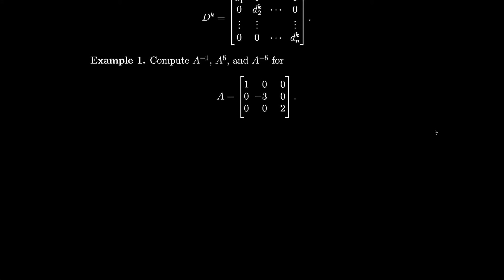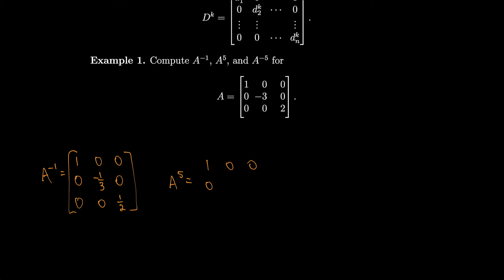As an example, let's compute A inverse, A to the fifth, and A to the minus five for a given diagonal matrix. For A inverse, we take the reciprocal of each entry on the main diagonal: one over one stays one, minus three becomes minus one third. For A to the fifth, one to the fifth stays one, negative three to the fifth becomes negative 243, and two to the fifth is 32. Pretty easy to take powers of diagonal matrices.